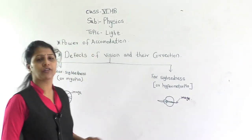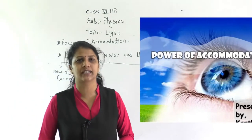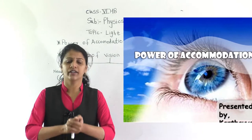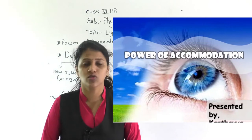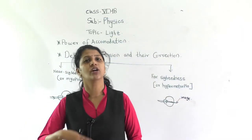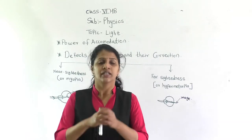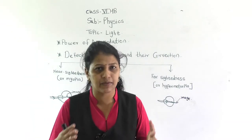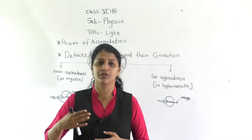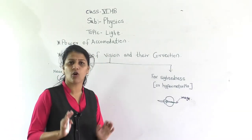So, what is the power of accommodation? In the last video I also taught you this concept. Power of accommodation means: our eye is a sense organ through which we are able to see objects — nearby objects and far objects. The ability to see both near and far objects clearly is called the power of accommodation.